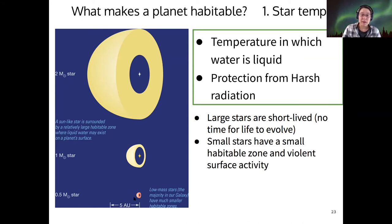And then the small mass stars, like the red dwarf stars, those have a really small habitable zone because they have a very low temperature and low luminosity. And also they tend to have a lot of violent surface activity, which is not great for life.